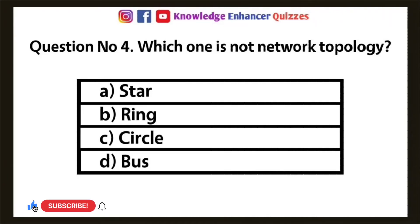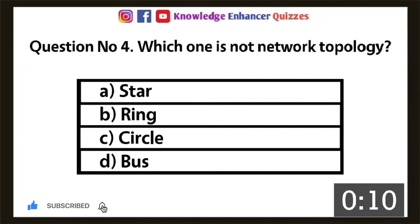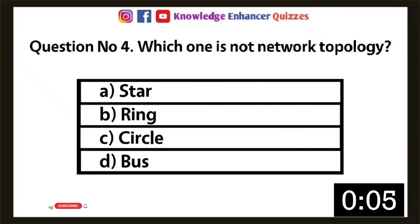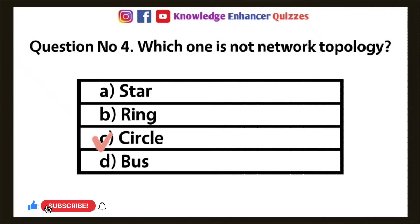Question 4: Which one is not a network topology? Option A: Star, Option B: Ring, Option C: Circle, Option D: Bus. Option C is the right answer.